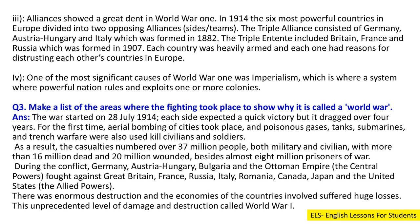Question 3: Make a list of the areas where the fighting took place to show why it is called a World War. Answer: The war started on 28 July 1914. Each side expected a quick victory but it dragged on over four years. For the first time, aerial bombing of cities took place, and poisonous gases, tanks, submarines and trench warfare were also used to kill civilians and soldiers. As a result, casualties numbered over 37 million people, both military and civilian, with more than 16 million dead, 20 million wounded and almost 8 million prisoners of war.